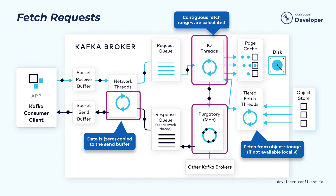Now let's take a look at how the fetch request from the consumer client is handled. The consumer client, when it sends the fetch request, will specify the topic and partition it wants to fetch data from, and also the starting offset where the data needs to be retrieved. The fetch request will similarly go through the broker's receive buffer, be picked up by the network thread, and then be put into the shared request queue. The I/O thread will use the index structure mentioned earlier to find the corresponding file byte range using the offset index, so it can know which range of bytes from the file it needs to return to the consumer.